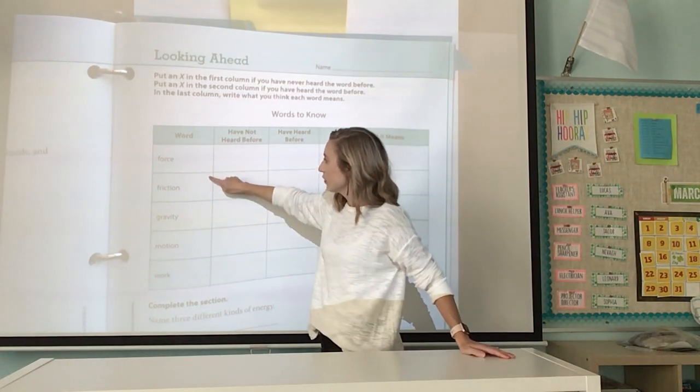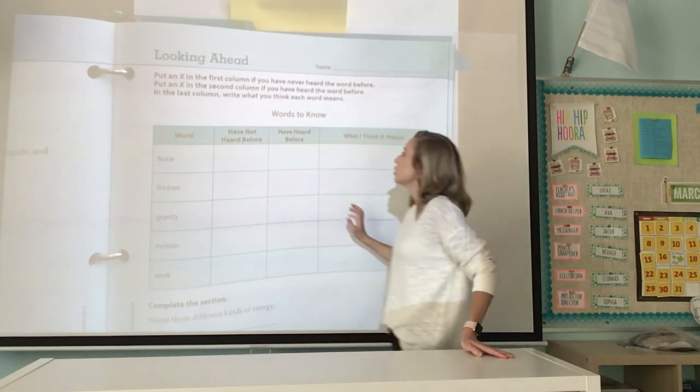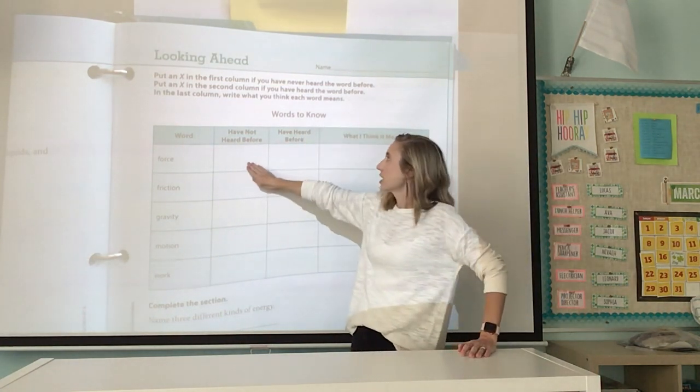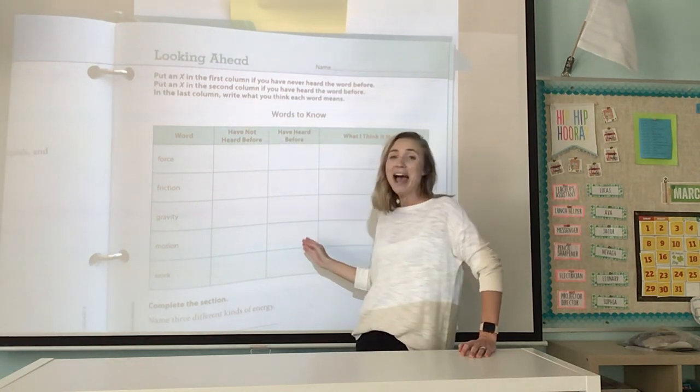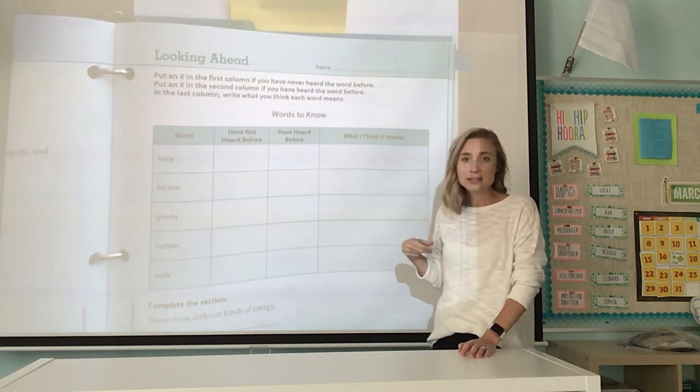These are the things that are going to be in this chapter. We have force, friction, gravity, motion, and work. So what I want you to do, it tells you put an X in the first column if you've never heard it before. Put an X in the second column if you have heard it before. And then if you have heard it or if you haven't, tell me what you think it means.